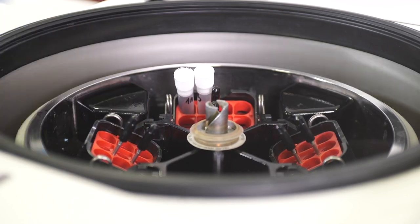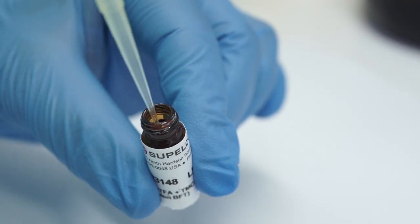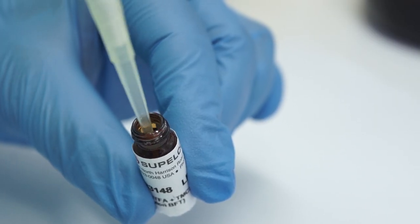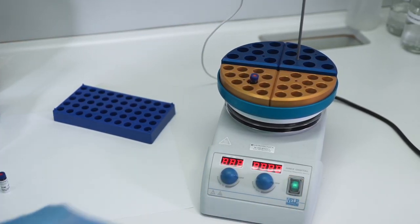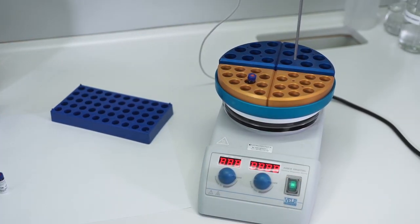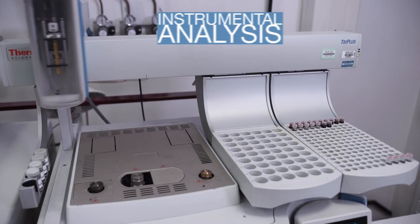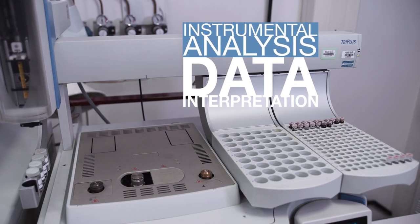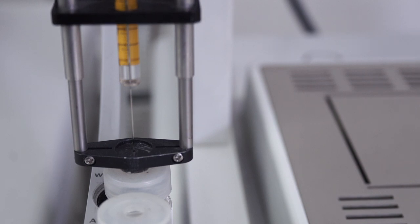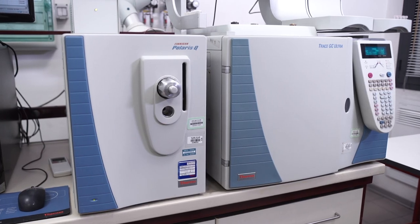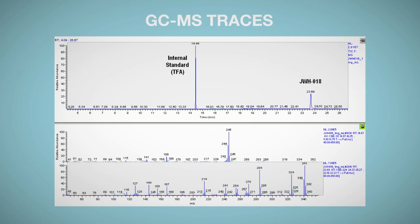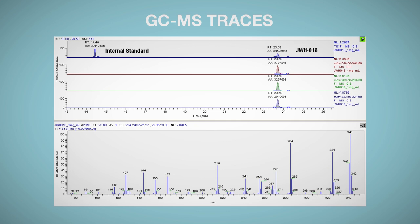An internal standard is added for assay control. For better GC-MS results, samples may be derivatized. Samples are then ready to load into the instrument for analysis. Identification and quantification of illicit ingredients are obtained mainly by chromatographic and mass spectrometric techniques. For routine analysis of target ingredients, GC-MS with or without derivatization is used for confirmation.